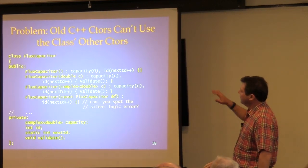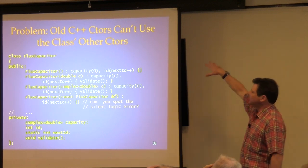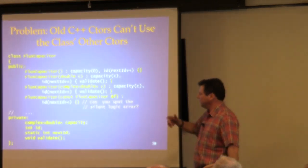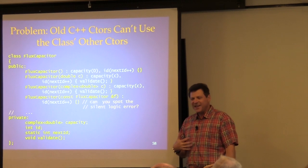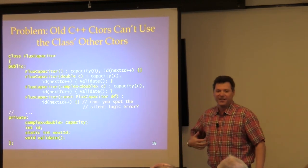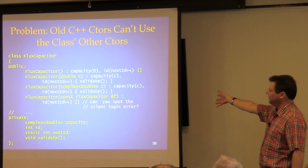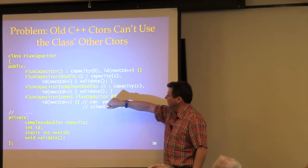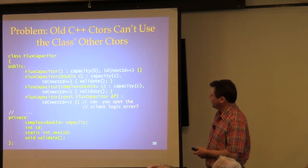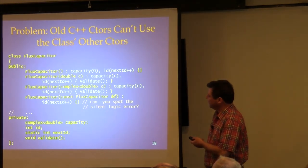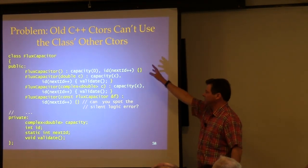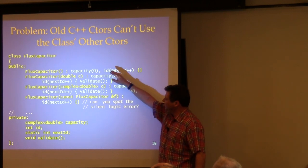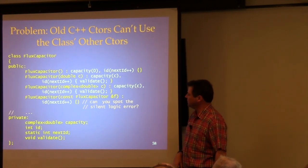So, final classes. In old C++, constructors could not leverage other constructors of the same class. If you learned Java and saw how Java constructors call each other, you'd wonder why C++ can't do that. Now it can. In C++11, a constructor can call another constructor. Here are four different constructors for flux capacitor — in old C++, everyone duplicates effort, creating real potential for error.